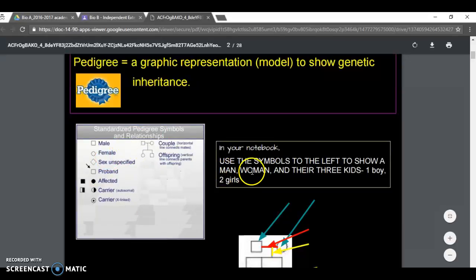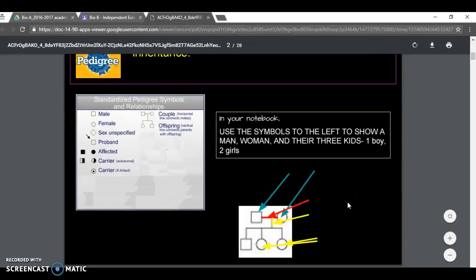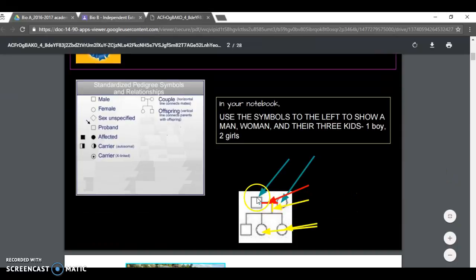It says in your notebook, use the symbols to the left, that's this box right here, to show a man, a woman, and their three kids: one boy, two girls. This slide isn't too hard, it just wants you to practice from the first step.